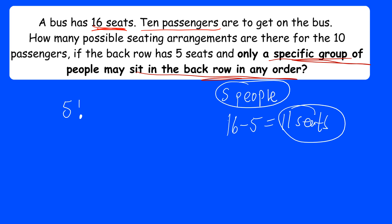Obviously not all seats will be taken, so we use permutation. I have a total of 11 seats and I need to arrange only five people in them, so it's 11 factorial divided by (11 minus 5) factorial. Remember, we use permutation if we need to arrange r things from a set of n things — just like we had nine books and needed to arrange three: nine factorial over (nine minus three) factorial.